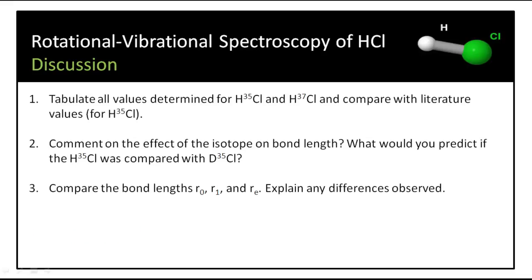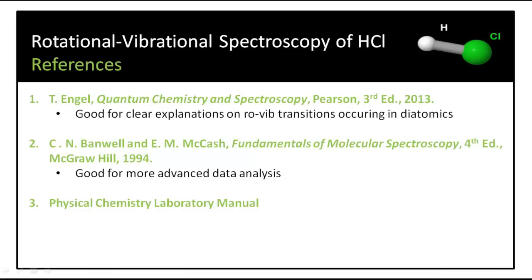So in your discussion, you should tabulate all values determined for H35Cl and H37Cl and compare these with the literature values. Literature values should be available for H35Cl. You can comment on the effect of the isotope on bond length. What would you predict if the H35Cl was compared with D35Cl? And you can compare the bond lengths R0, R1 and RE and explain any differences observed.